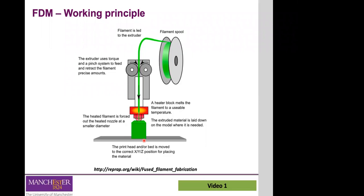There are different variations in terms of the configuration of these systems. The most common setup has XY displacement on the building platform while the printing head only moves vertically. However, some commercial systems can work differently — they can have all the movements in the print head, or for example, XY displacement on the print head with the platform only going up and down.